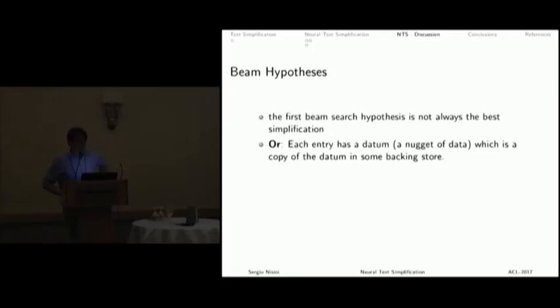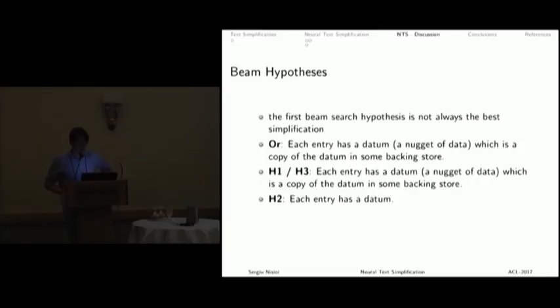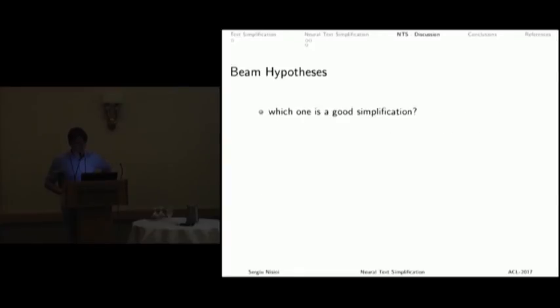The first hypothesis is not always the best for simplification. For example, look at this example. The first and the third hypotheses are the same as the original sentence. But if you look at the second hypothesis, we see quite a big change in the content, which indicates content reduction. Also, if you look at the fourth hypothesis, we see that the parentheses have been removed. So it's kind of a good simplification output now.